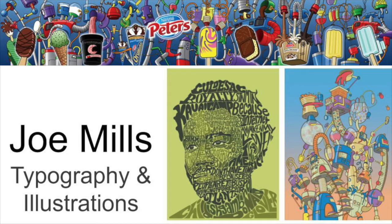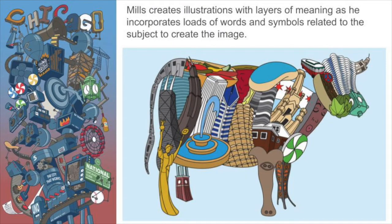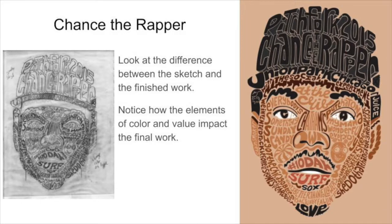This is the work of Joe Mills. Joe Mills is an illustrator well known for his use of typography — different types of fonts or styles of lettering — to create his images. What he does in his illustrations is add layers of meaning by incorporating loads of words and symbols related to the subject to form the image.